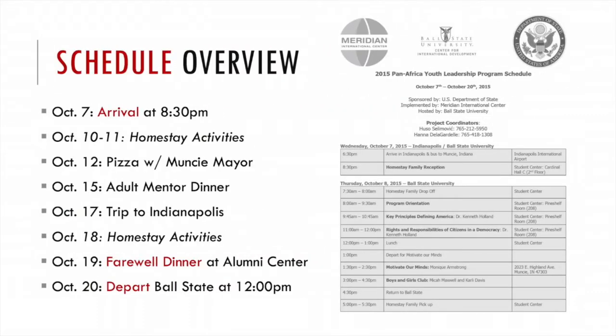The schedule has a few important dates to keep in mind. On October 7th, you'll pick up the student at 8:30 p.m. in the Student Center. October 10th through 11th is the first weekend with your participants and activities are up to you. October 12th is a community day with Muncie Mayor Dennis Tyler, and pizza will be shared that evening. October 15th is a dinner only for the adult mentors, and we will pick up the mentors from their home. Saturday, October 17th is a day trip to Indianapolis and you are always welcome to join us. October 18th is the last day for homestay activities. October 19th is a farewell dinner at the Alumni Center. Tuesday, October 20th, departure from the Student Center at 12 o'clock for Chicago, Illinois.